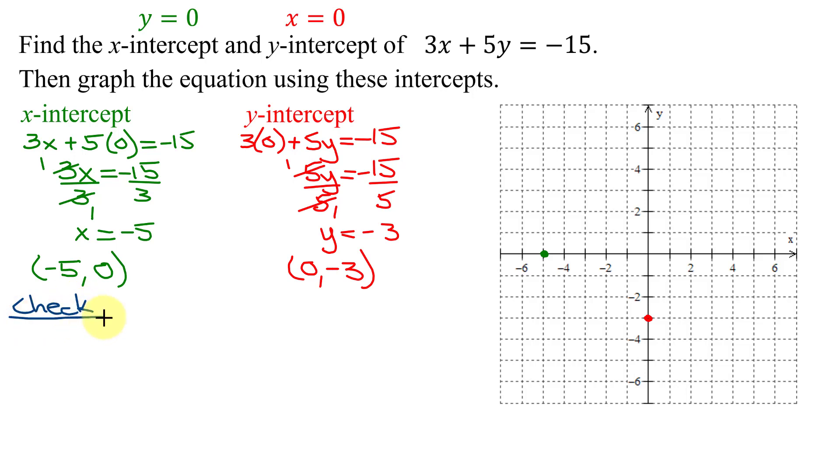I try and avoid fractions, so what I do, since my x-intercept was 5 units to the left of the origin, I'm going to pick an x value 5 units to the right. So I'm going to plug x equals 5 into the original equation and solve it for y. So I get 3 times x, which is 5, plus 5y equals negative 15.